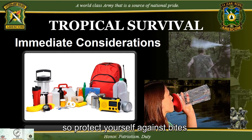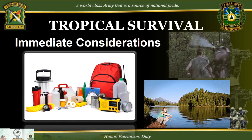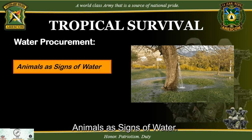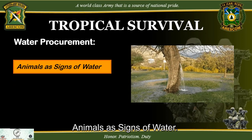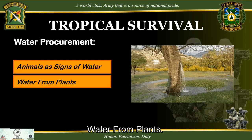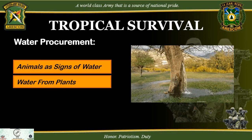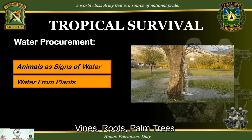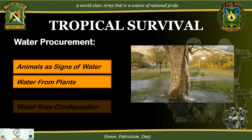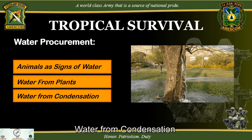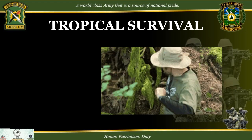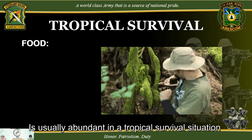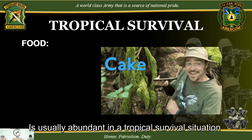Water procurement: animals as signs of water, water from plants, vines, roots, palm trees, and water from condensation. Food is usually abundant in a tropical survival situation.